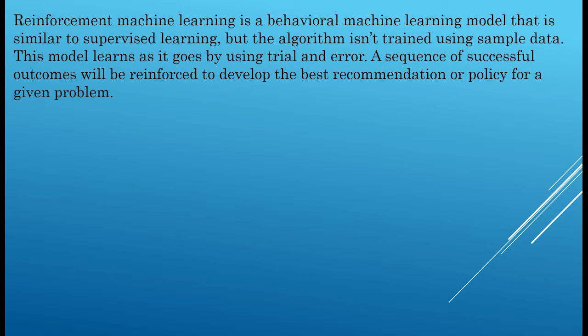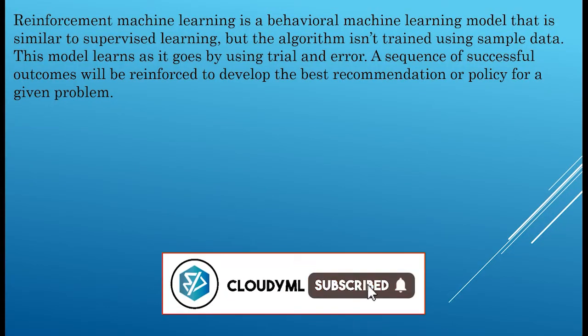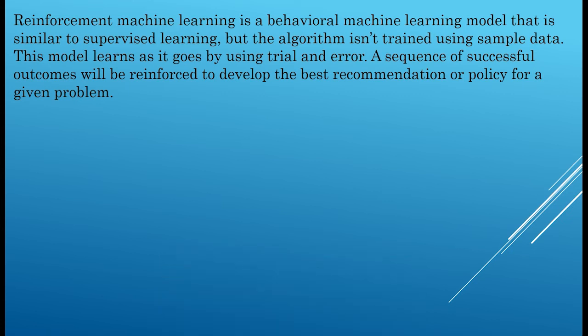The third branch is reinforcement machine learning — a behavioral model similar to supervised learning, but the algorithm isn't trained using sample data. This model learns as it goes by trial and error. A sequence of successful outcomes is reinforced to develop the best recommendation or policy for a given problem. We will not go in depth into reinforcement learning; it's provided here for definitional understanding only.